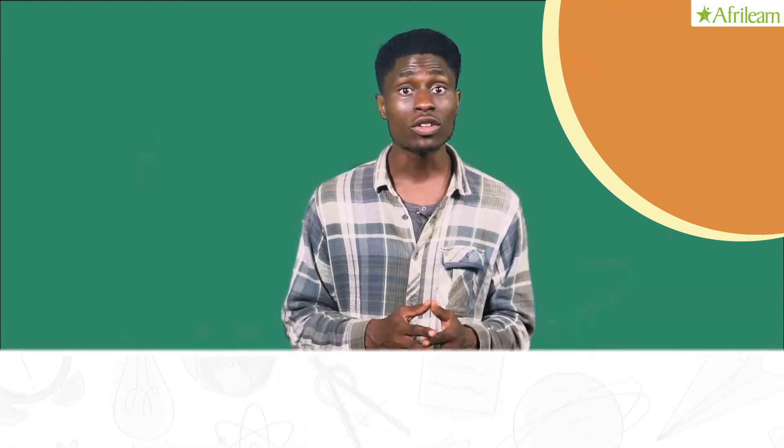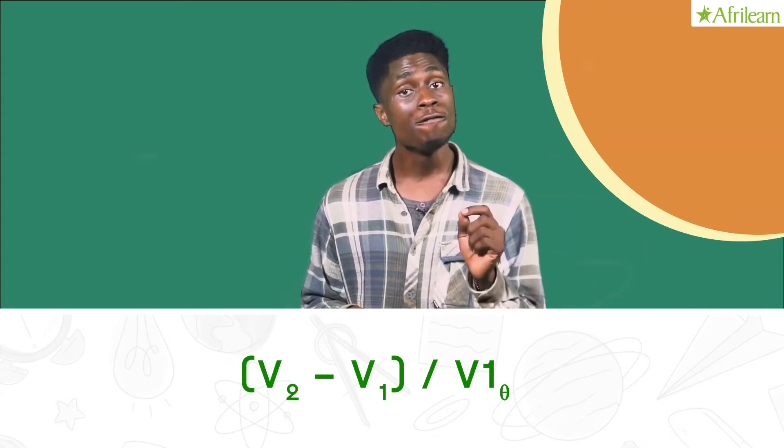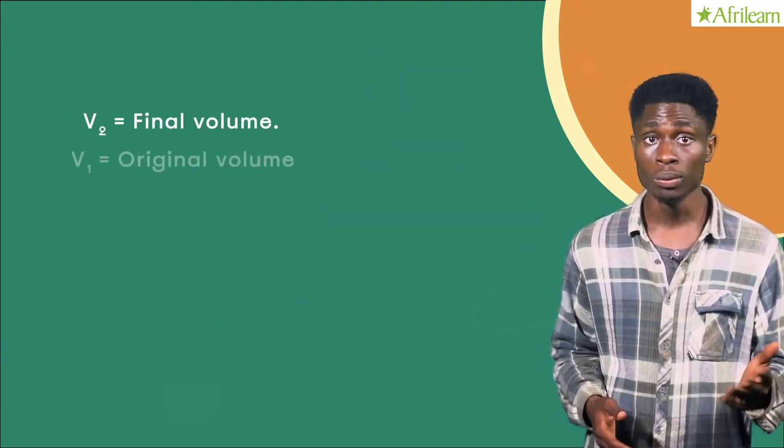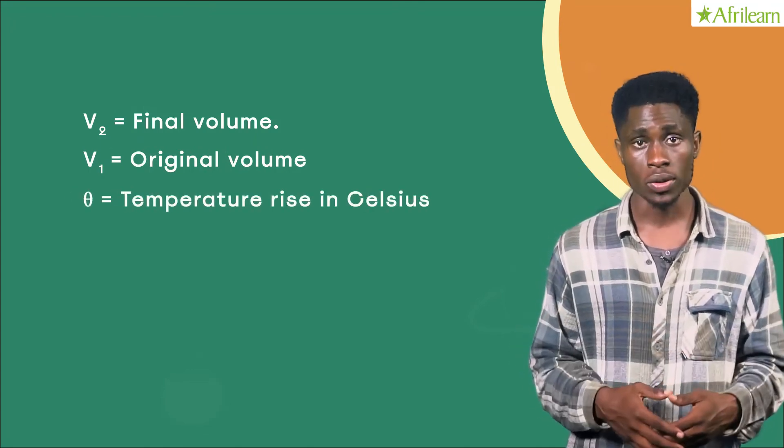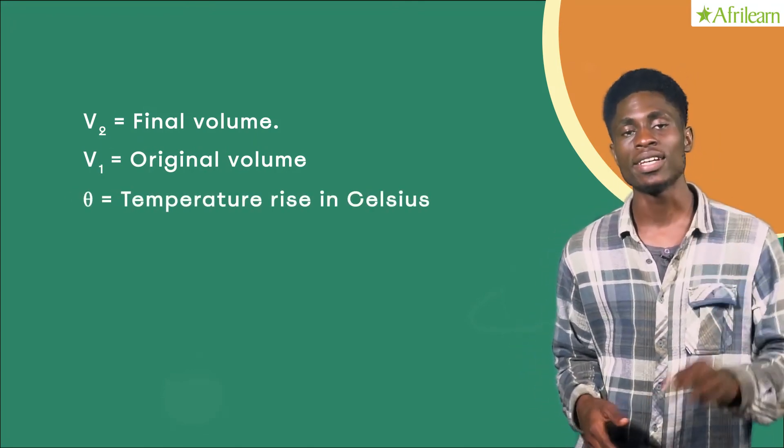It is the fractional increase in volume per kelvin rise in temperature, relative to that of the containing vessel. The formula for calculating volume or cubic expansivity is (V2 minus V1) divided by V1 times theta, where V2 represents the final volume, V1 represents the original volume, and theta represents the temperature rise in Celsius.